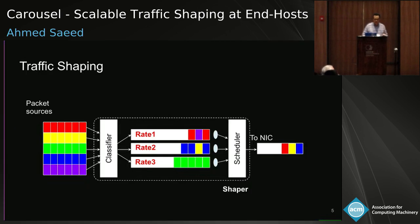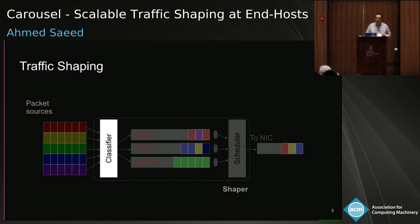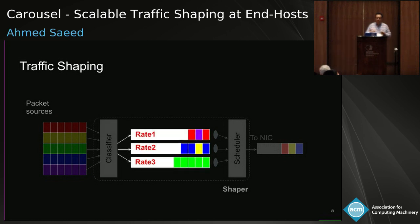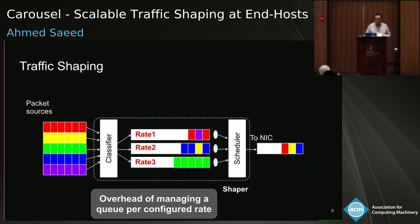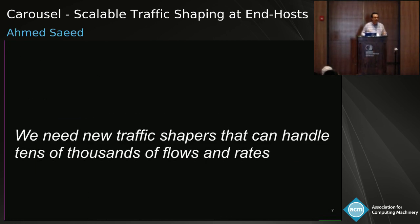Let's look at the architecture of traffic shapers. Packets enqueued in the traffic shapers are first classified based on their class and configured rate. Then packets belonging to the same class are enqueued in the same queue. Then a scheduler needs to look at the queues and dequeue packets from them in order, either using timers or busy polling. This architecture works fine if you have a small number of configured rates, like three in this picture. But as you scale to tens of thousands of configured rates, you start running into problems — the classifier, data structure, and scheduler all need to handle tens of thousands of queues.